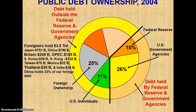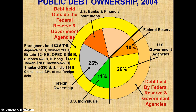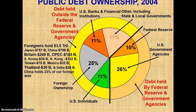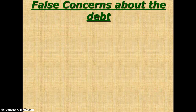Foreigners hold $3.5 trillion. U.S. banks and financial institutions, other state and local governments — false concerns about the debt.